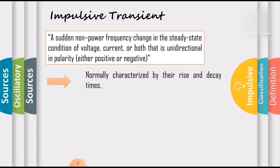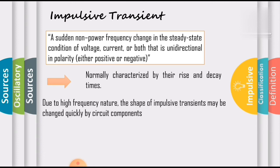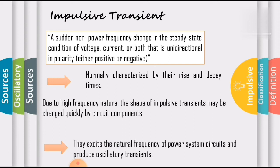Impulsive transients are normally characterized by their rise and decay times. Due to their high frequency nature, the shape of impulsive transients may change quickly by circuit components and may have significantly different characteristics when viewed from different parts of the power system. They are generally not conducted far from the source. Impulsive transients can excite the natural frequency of power system circuits and produce oscillatory transients.